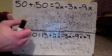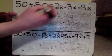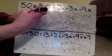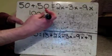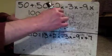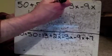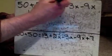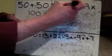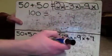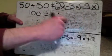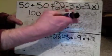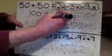Alright, let's take a look at the top one. Combining things together — on this side of the equal sign, I could put the 50 and the 50 together to make 100. On the other side, I have x, x, x — 2x, negative 3x, negative 9x. If I put the negatives together, that would be negative 12. Negative 12 and positive 2 is going to be negative 10x.